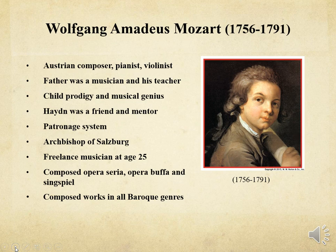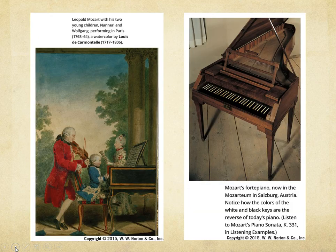Mozart wrote more than 20 operas in different genres: Opera Buffa, which was Italian comic opera; Opera Seria, which is Italian serious opera; and Singspiel, a lighter form of German opera that includes spoken dialogue. On this slide to the left, you'll see a painting of the Mozart family, with his sister singing and Wolfgang playing either the harpsichord or the fortepiano. His father is playing the violin. To the right is Mozart's actual fortepiano that's in Salzburg, Austria. You'll notice how the colors of the white and black keys are the reverse of today's pianos.